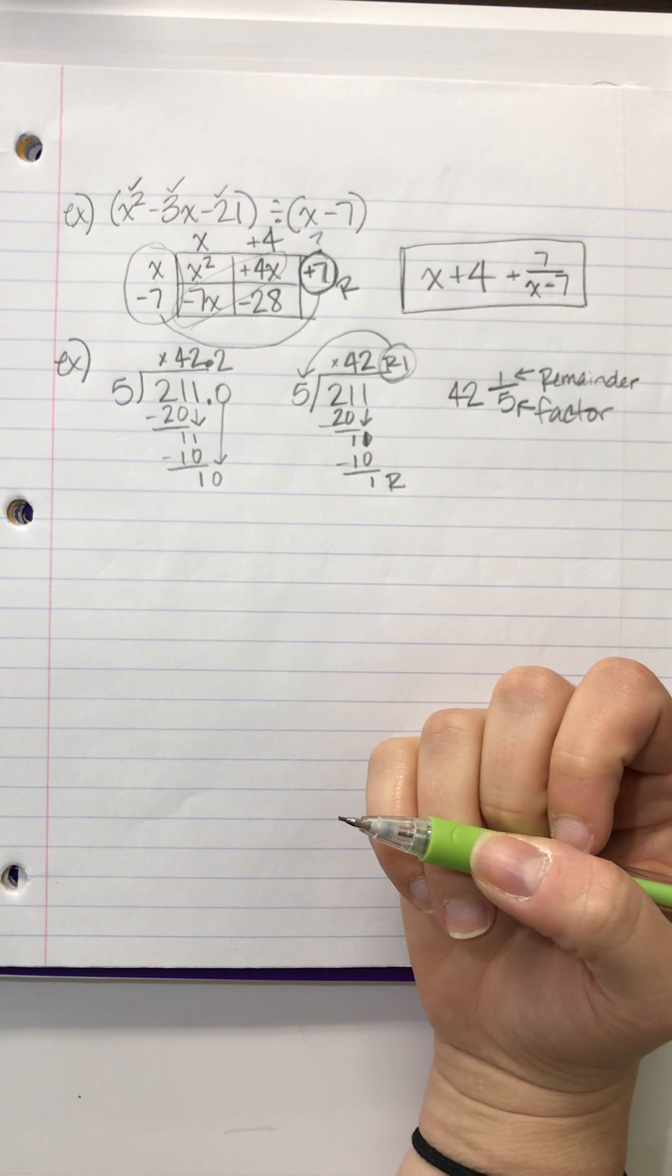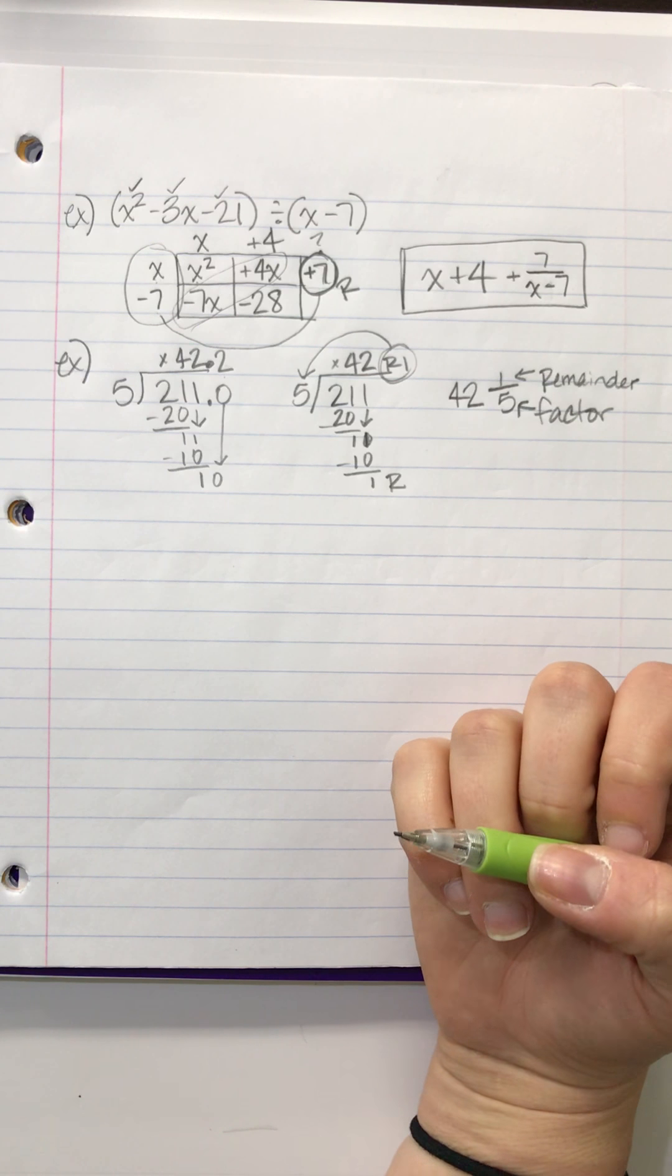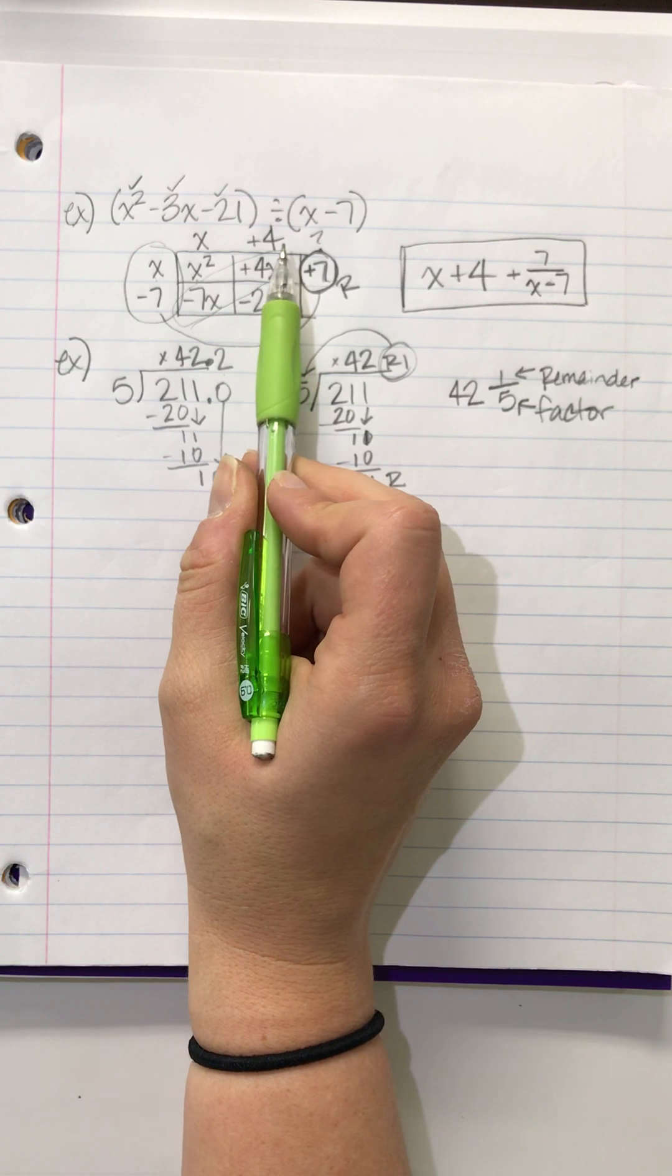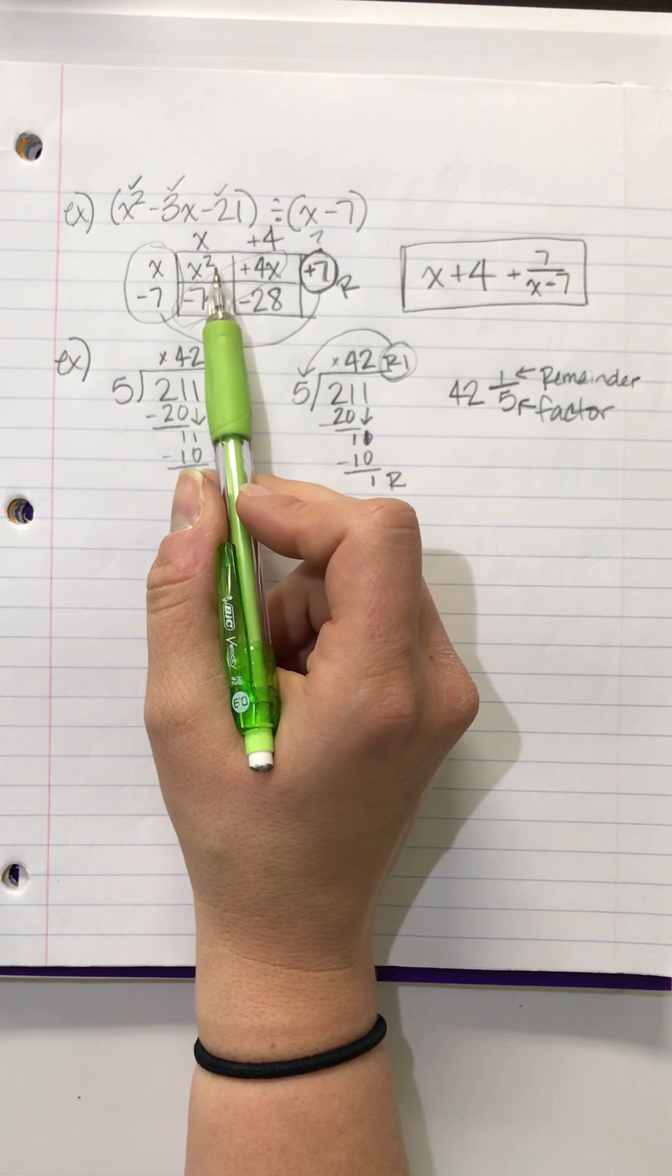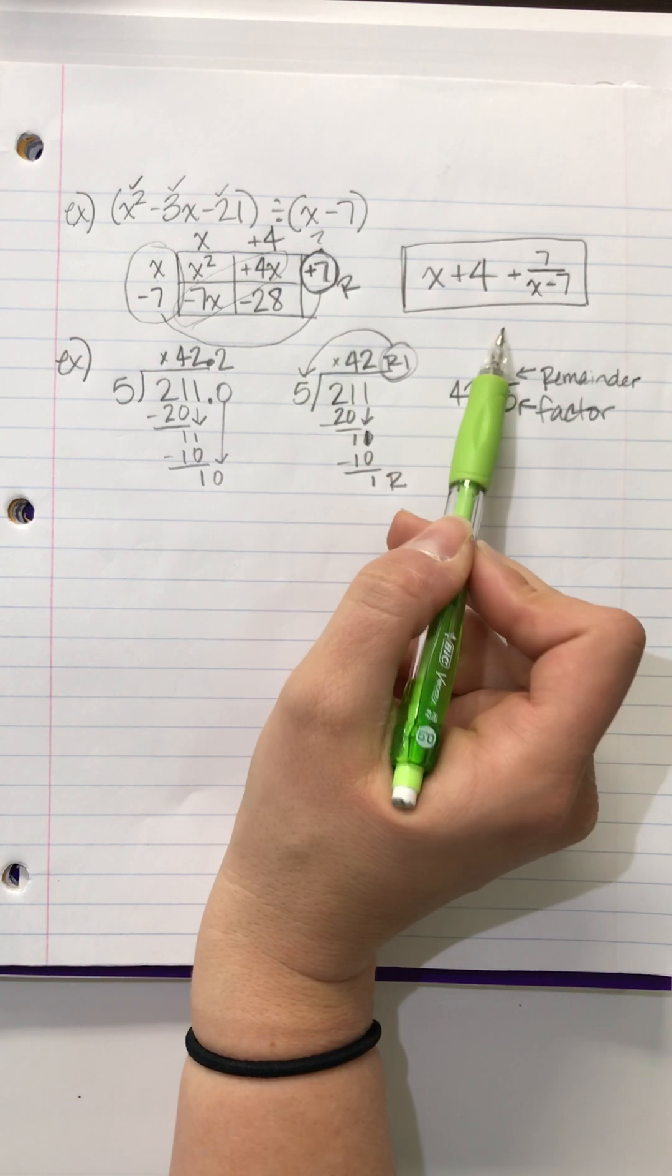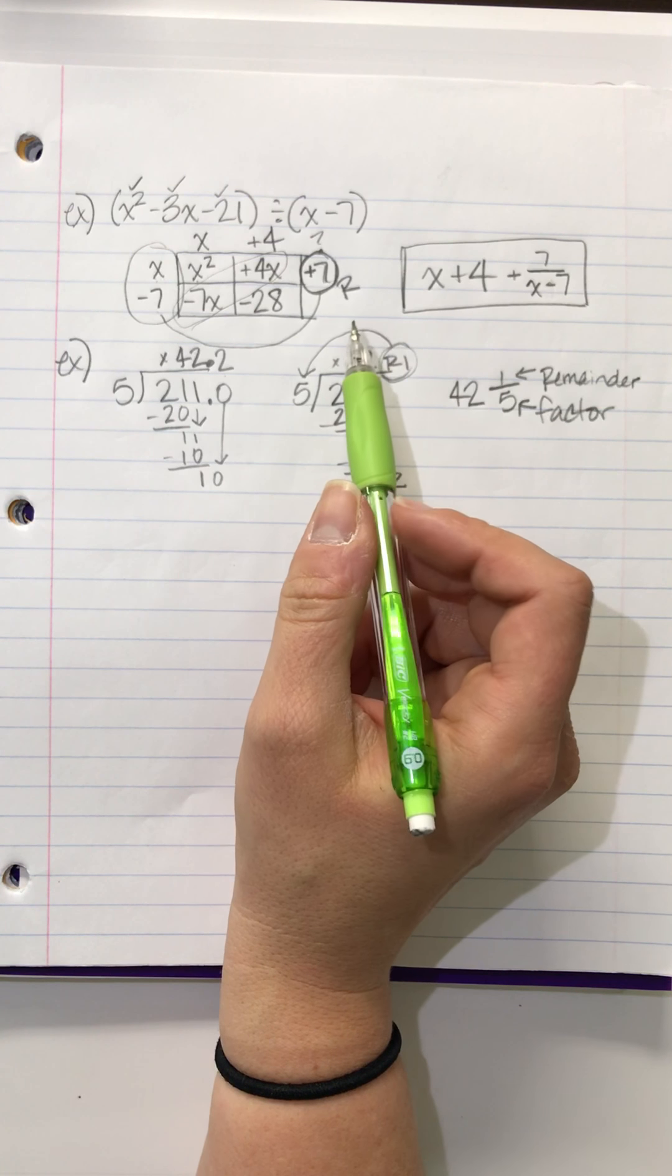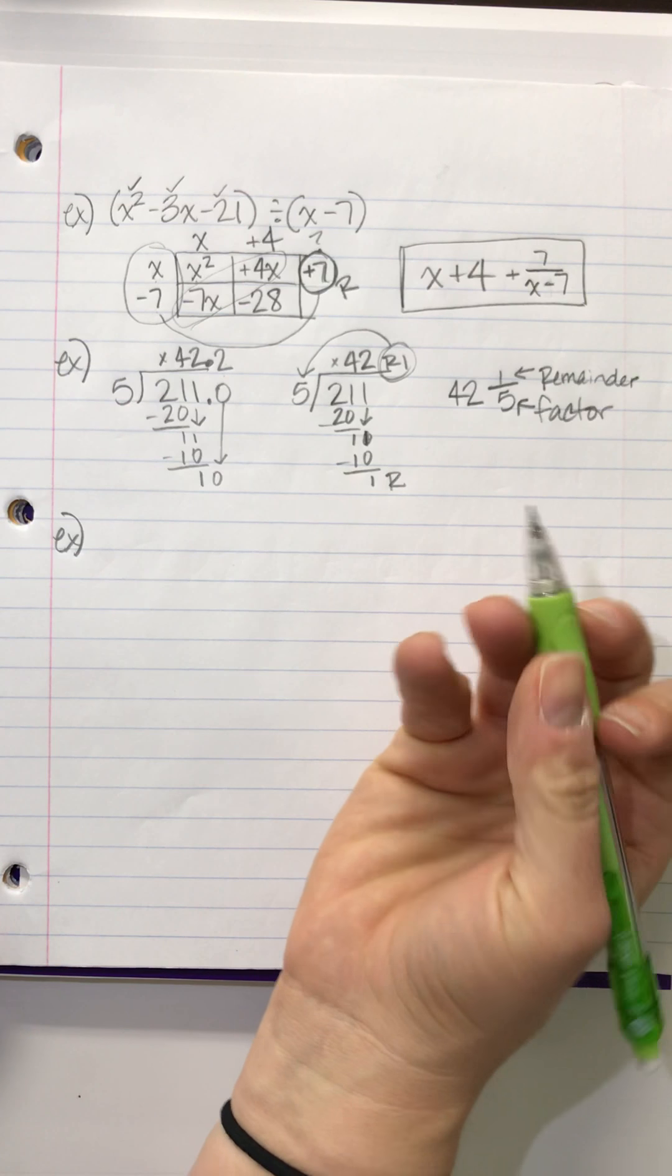Would the calculators give you the same answer? No. So, anytime you have a problem that doesn't have an equal sign and has variables, the calculators will not do it for you. Because calculators will not, really what you're doing here is simplifying this. You're not actually getting, like, x is 7. You're getting a simplified answer. Okay, so let's kind of practice another one and I think it will make more sense.